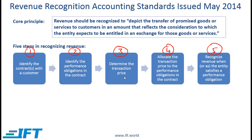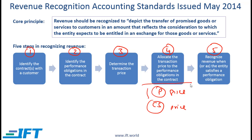Step 3 is to determine the transaction price. Step 4 is to allocate the transaction price to the performance obligations in the contract. For example, a software company that sells a product and a consulting service — two separate performance obligations — allocates a price to each. Step 5: revenue is recognized when the entity satisfies a performance obligation. If the product is delivered upfront, revenue is recognized at delivery; if the service is rendered over a one-year period, revenue is recognized as that obligation is fulfilled.